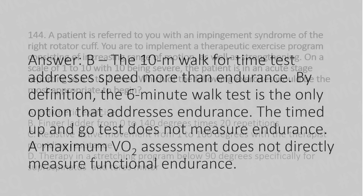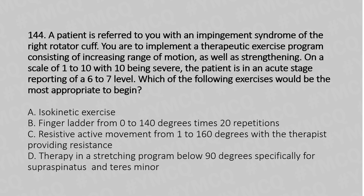Now let's move to question number 144. A patient is referred to you with impingement syndrome of the right rotator cuff. You are to implement a therapeutic exercise program consisting of increased range of motion as well as strengthening. On a scale of 1 to 10, with 10 being severe, the patient is in an acute stage reporting 6 to 7 level. Which of the following exercises would be most appropriate to begin? Option A: Isokinetic exercise. Option B: Finger ladder 0 to 140 degrees times 20 repetitions. Option C: Resistive active movements from 1 to 160 degrees with therapist providing resistance. Option D: Therapy in a stretching program below 90 degrees, specifically for the supraspinatus and teres minor.